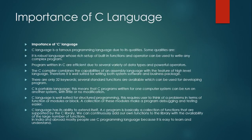The C compiler combines the capabilities of an assembly language with the features of a high-level language. Therefore it is well suited for writing both system software and business packages. You can use assembly language within C, and the C compiler has the capability to translate both assembly language and C language into machine code. So any assembly language programmer can use their code within C language.